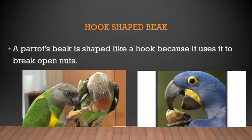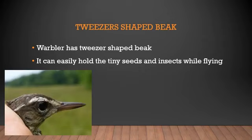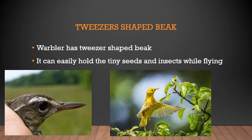Parrots eat peanuts and different kinds of nuts with hard shells. To open those hard shells they need a hard beak in the shape of a hook. Next is the tweezer-shaped beak. The warbler has a beak which is tweezer-shaped — very thin and small — and it can easily hold tiny seeds and insects while flying. Tweezers are like the pluckers you find at home.